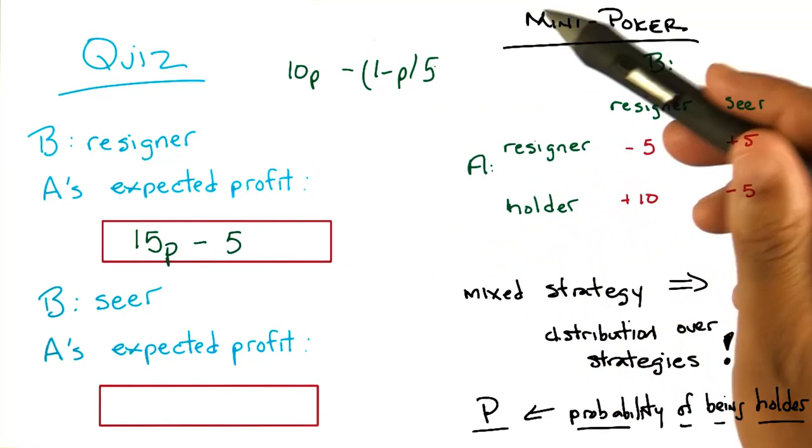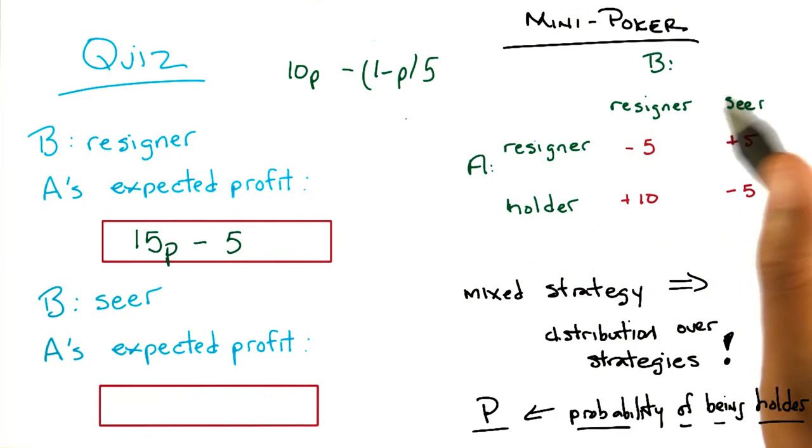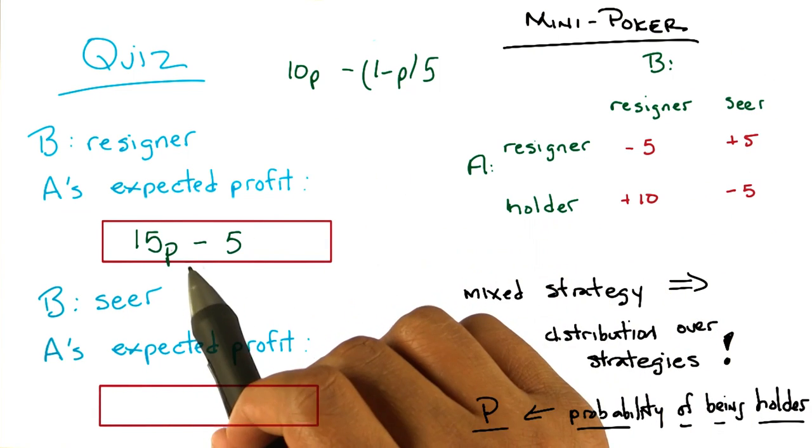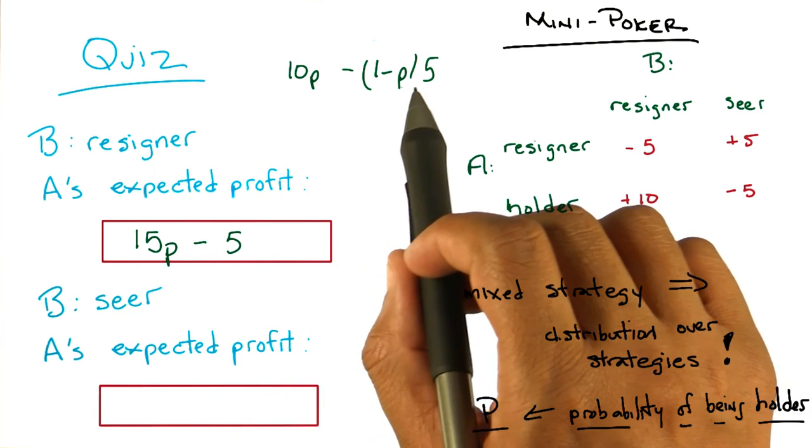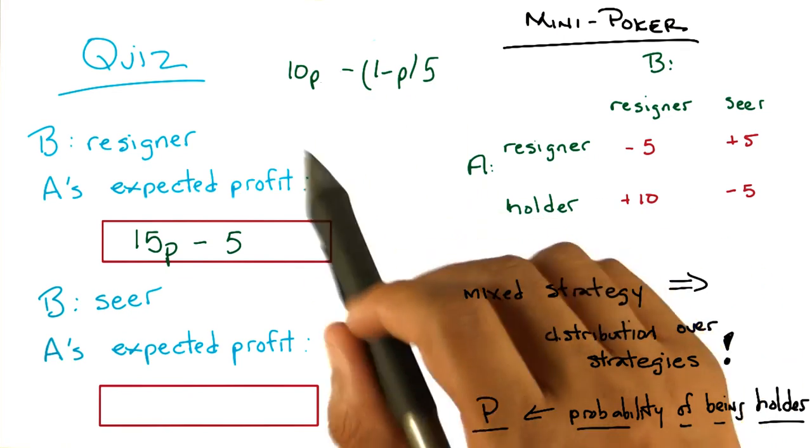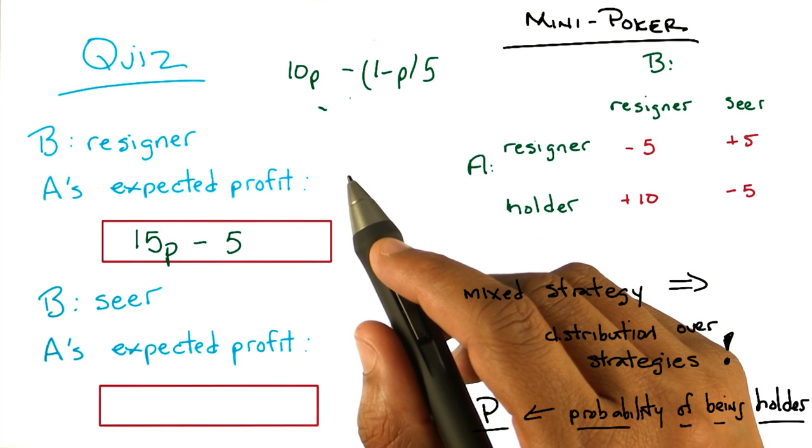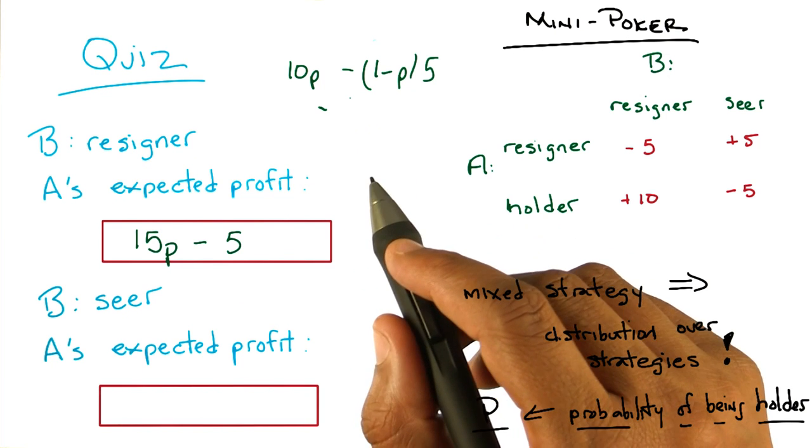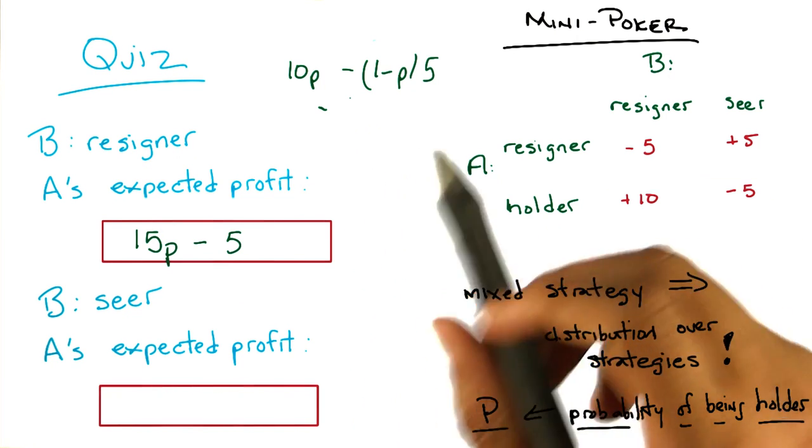We would obviously accept either answer or any combination of those letters. Well, I think I might have to do this quiz over, actually. No, not the one. I'm talking about either 15P minus 5 or 10P minus 1 minus P times 5, or 10P plus 1 minus P times minus 5, or any other combination that we can get Pushkar to actually bother to implement or check. Well, that was pretty good.